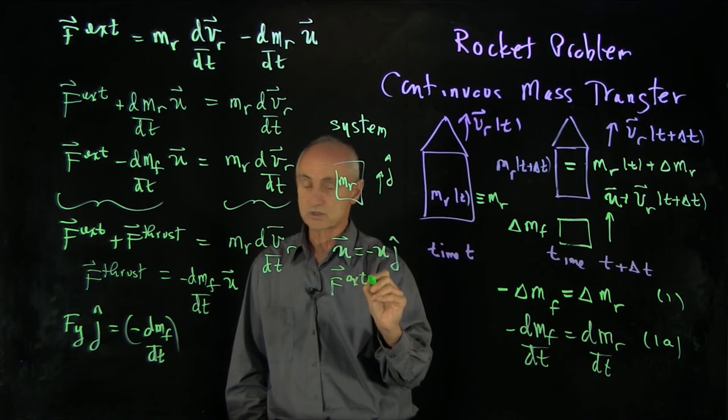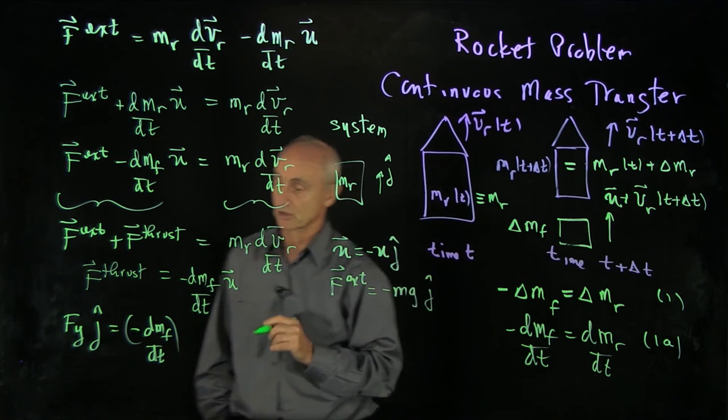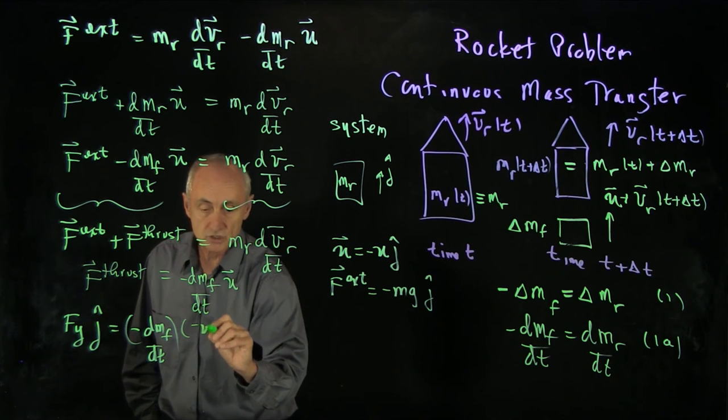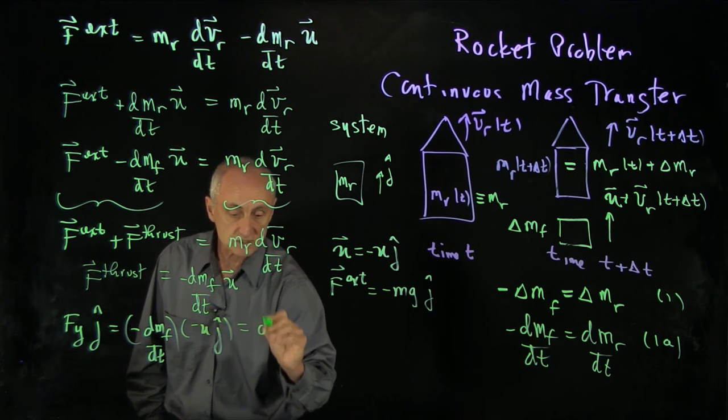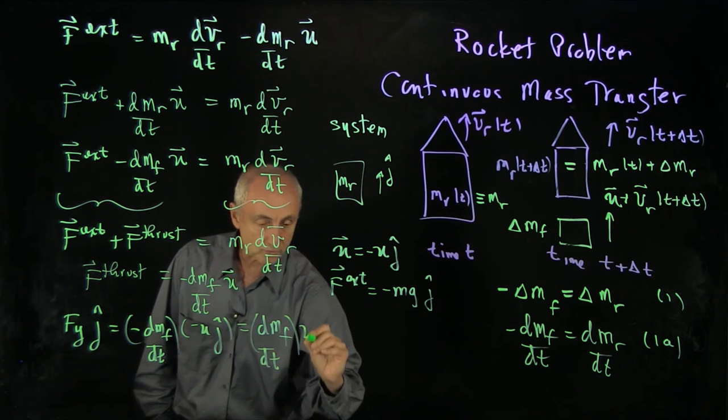The external force, by the way, would be minus mg j hat if it's near the surface of the earth. So we have another minus u j hat. And we see that we have a positive thrust force in the vertical direction that is giving us an additional force other than the gravitational field.